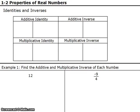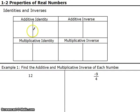Now that we know what the real numbers are, let's learn about some properties that we can use to simplify and solve equations. We're going to start out with the identity property for addition, also known as the additive identity.